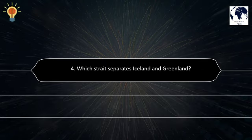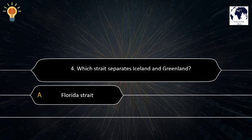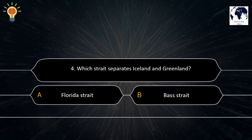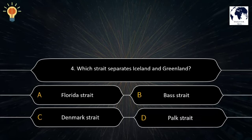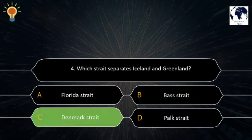Question number 4. Which strait separates Iceland and Greenland? Option A: Florida Strait. Option B: Bass Strait. Option C: Denmark Strait. Option D: Park Strait. The correct answer is Option C — Denmark Strait.